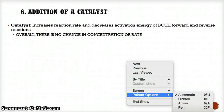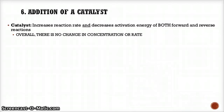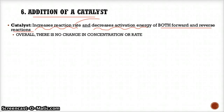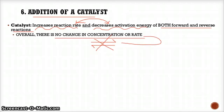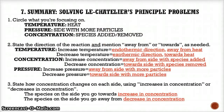Finally, when you add a catalyst, it will increase the reaction rate and decrease the activation energy of both the forward and reverse reactions equally. Since both are catalyzed equally, they cancel each other out. As a result, there is no change in concentration and no change in rate overall.